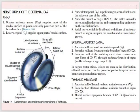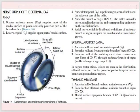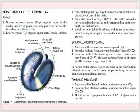The tympanic membrane separates the external auditory meatus from the middle ear. It is oblique in position, approximately one centimeter by 0.8 centimeter, and about 0.1 millimeter thick. This is called the pars tensa, which makes up most of the tympanic membrane. The periphery is thick and attached to the fibrocartilaginous ring. The central part is indented inward at the tip of the malleus, which is called the umbo.